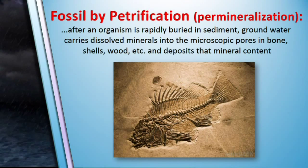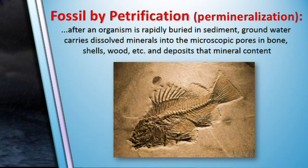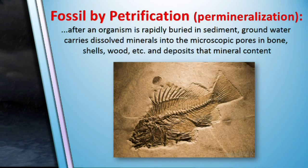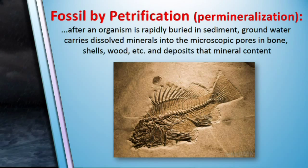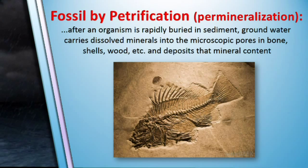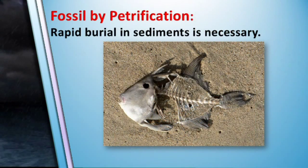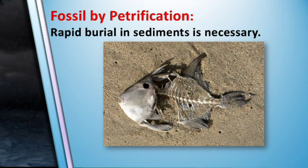The next way a fossil can be formed is by petrification or permineralization. After an organism is rapidly buried in sediment, groundwater carries dissolved minerals into the microscopic pores in bones, shells, wood, and more. That water deposits the mineral content, and the original porous structure of the organism is then preserved by the deposited minerals and converted into stone. If an organism is not rapidly buried in sediments, normal decay prevents the item from being preserved.